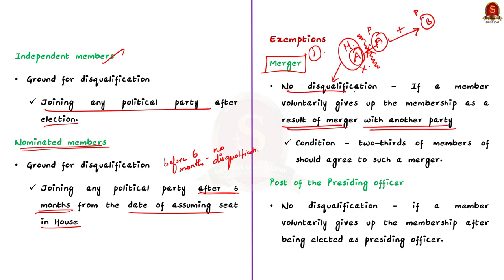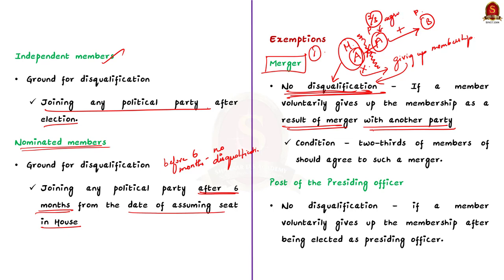However, this applies only when two-thirds of the members of the political party have agreed to a merger. The second exception is that if a member voluntarily gives up the membership of a party after being elected as the presiding officer, then they cannot be disqualified. This exemption has been provided in view of the dignity and impartiality of the office of the presiding officer.